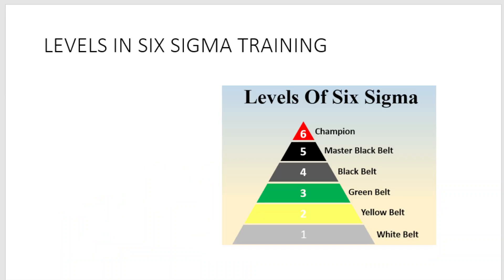Looking at the levels in Six Sigma training, there are various levels starting from White Belt, Yellow Belt, Green Belt, Black Belt, Master Black Belt, and Champion. The White Belt certification is given to any person who knows the basics of Six Sigma and Lean.